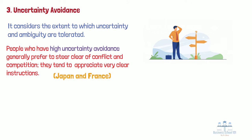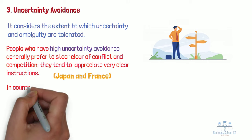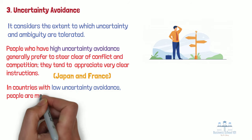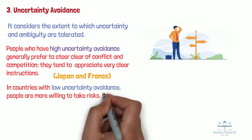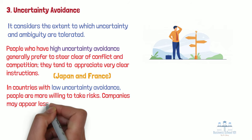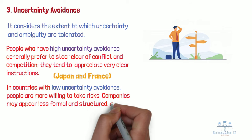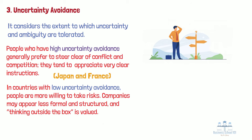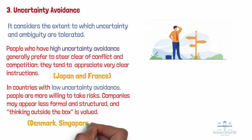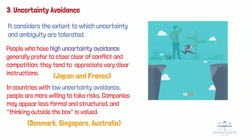In countries with low uncertainty avoidance, people are more willing to take risks. Companies may appear less formal and structured, and thinking outside of the box is valued. Examples of these cultures include Denmark, Singapore, Australia, and to a lesser extent the United States. Members of these cultures usually require less formal rules to interact.